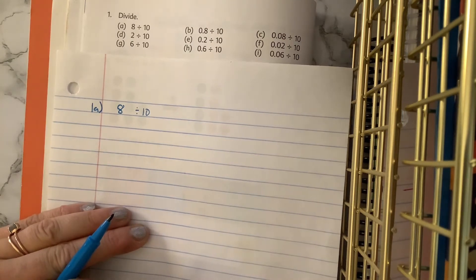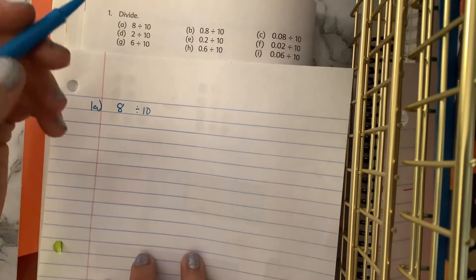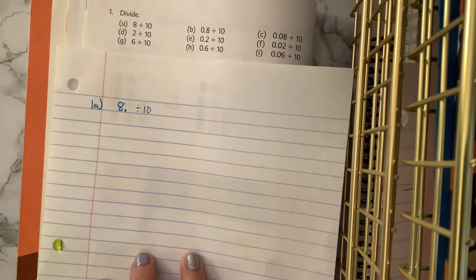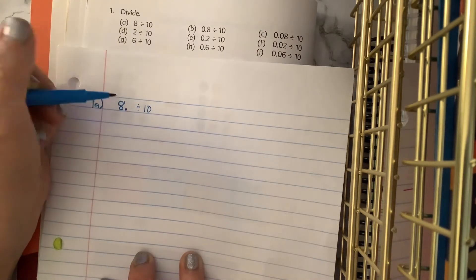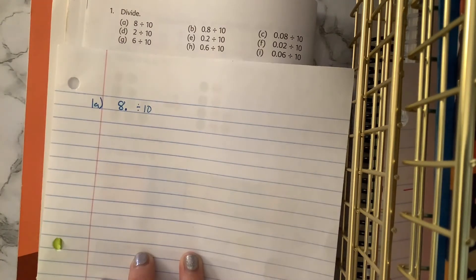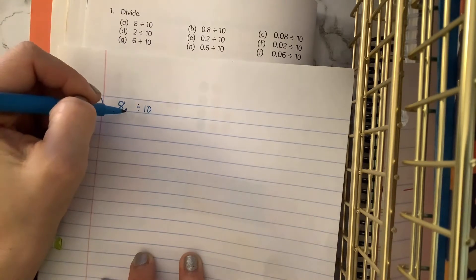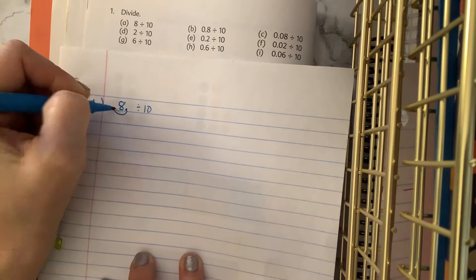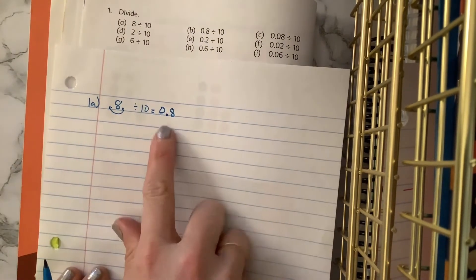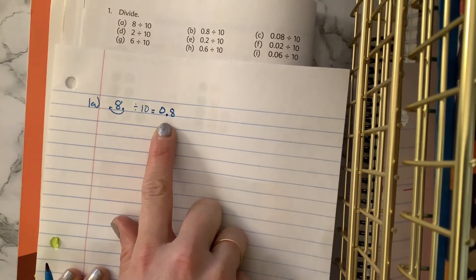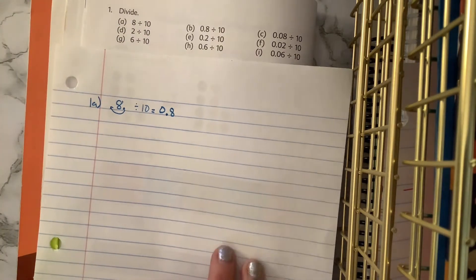You might be looking at this and saying, but there is no decimal point. Remember that with whole numbers there isn't a visible decimal point, but we can imagine that there's one there — because 8 is the same as 8.0 or 8.00 or 8.000. So 8 divided by 10: we add that decimal point, move it 1 to the left, and we end up with 8 tenths. Make sure you have a zero before your decimal point — we want to write 0.8, the proper way of expressing our decimals.